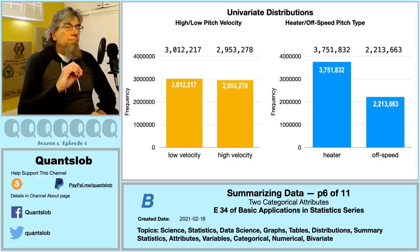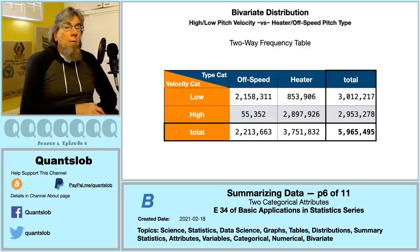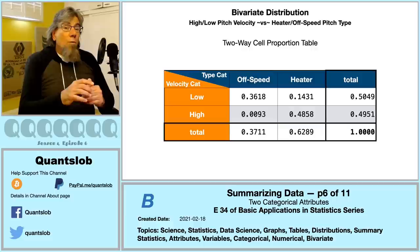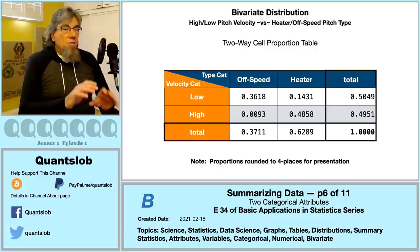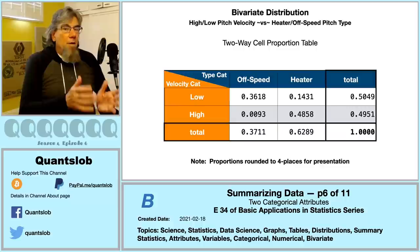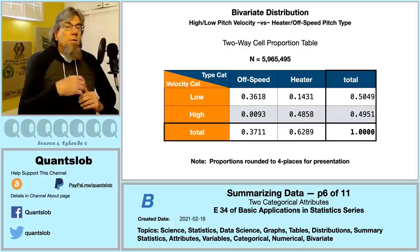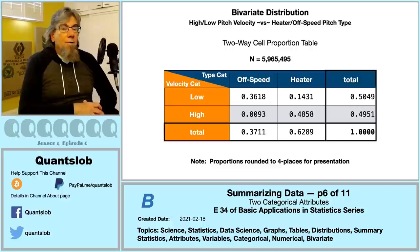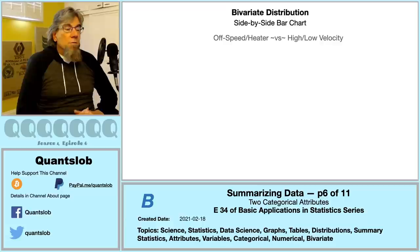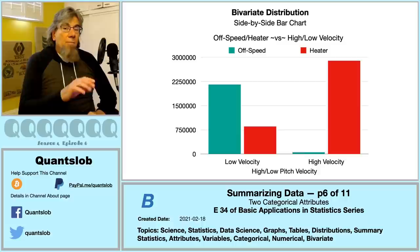One popular variation of a two-way table is a cell proportion contingency table — we divide every entry by the grand total. While these proportions are easy to read, this distribution as it stands is not fully informative. If someone wanted to know how many pitches were high velocity and off-speed, that answer isn't directly available. For this reason, when showing cell proportions we should include the total number of observations. Our summarizing data mantra is comparison, and comparison is absolutely of the essence when looking at bivariate distributions.